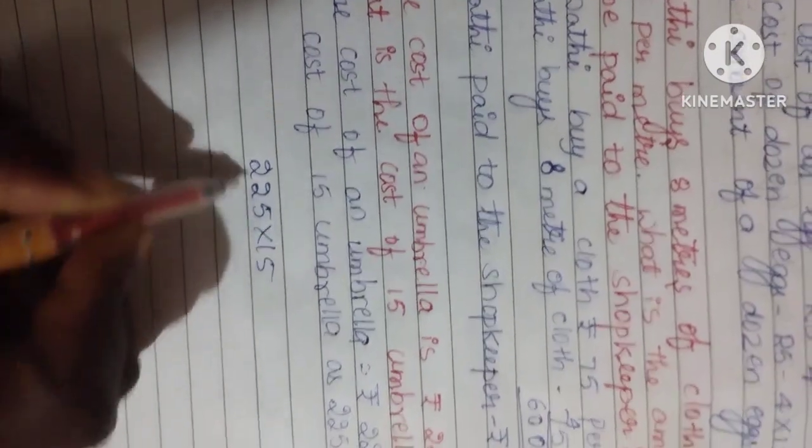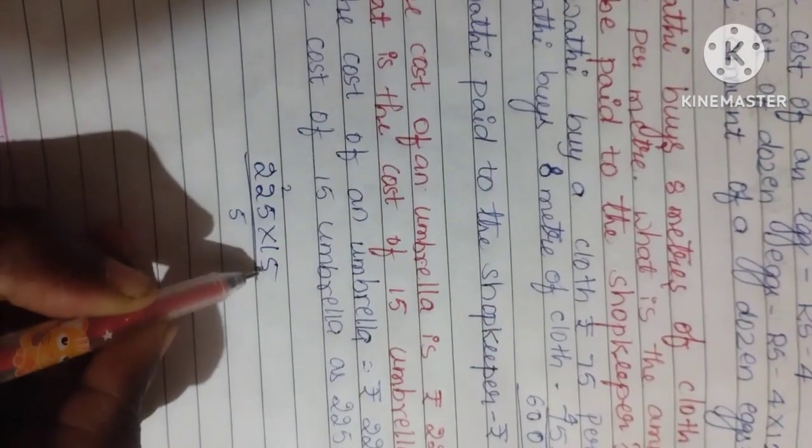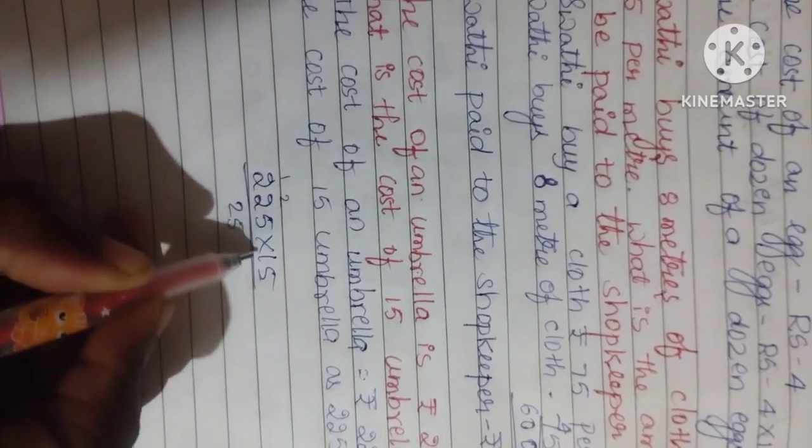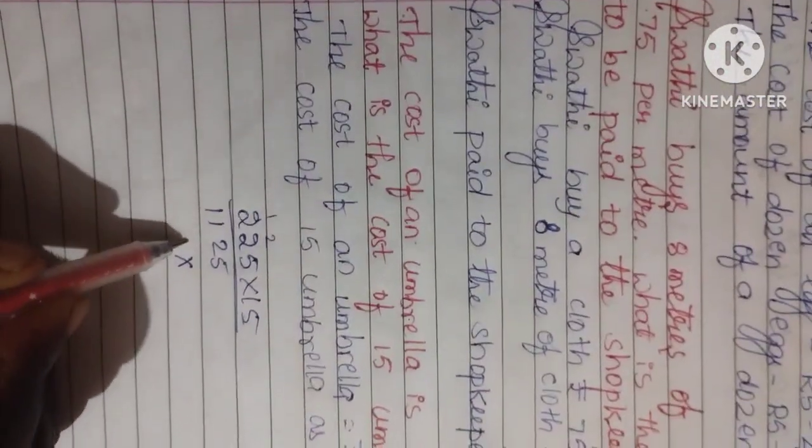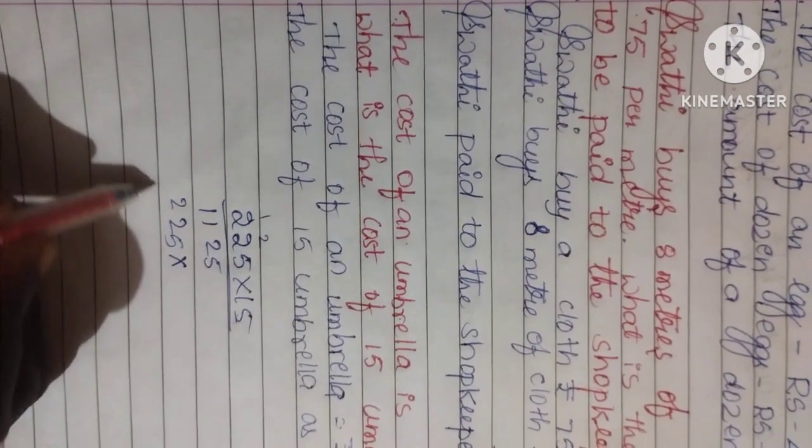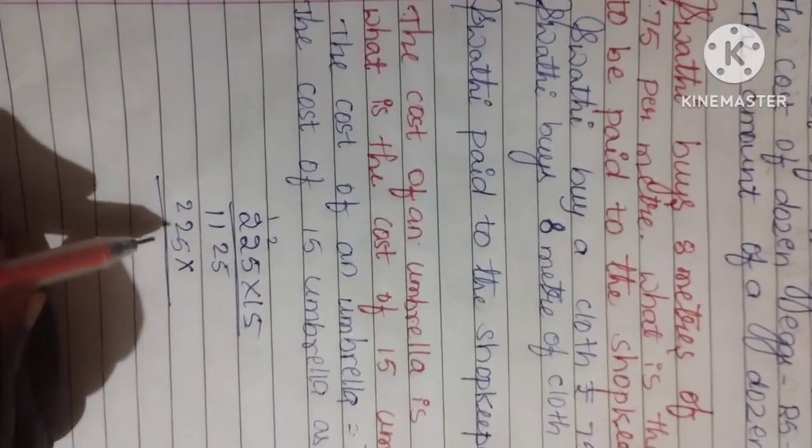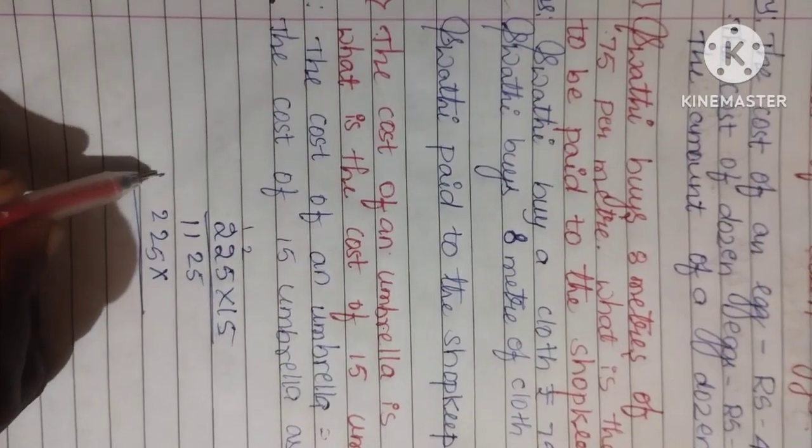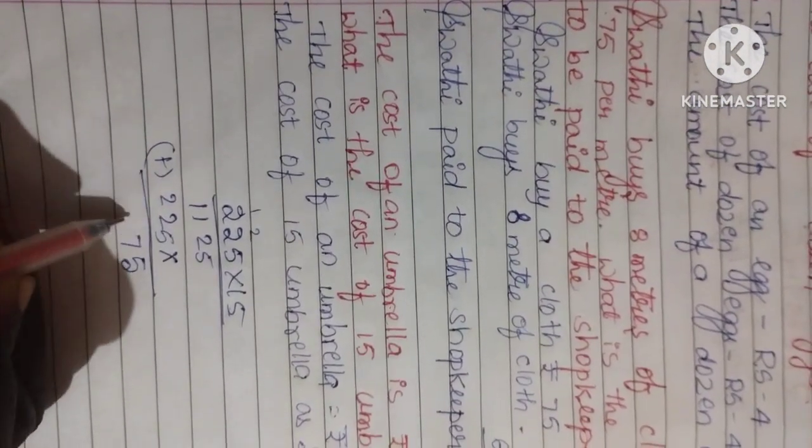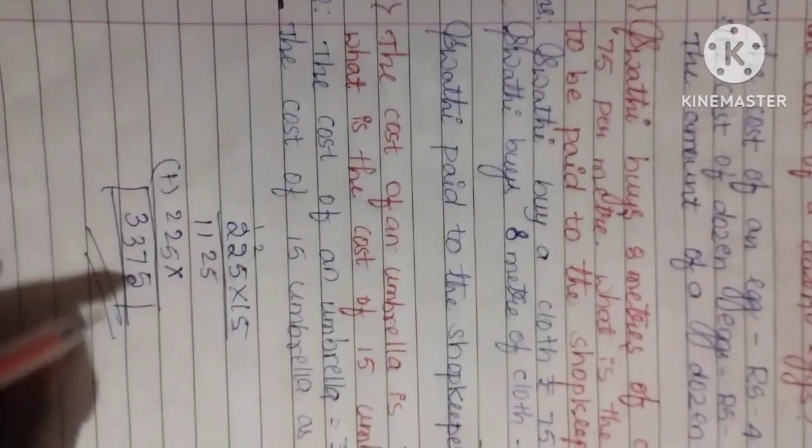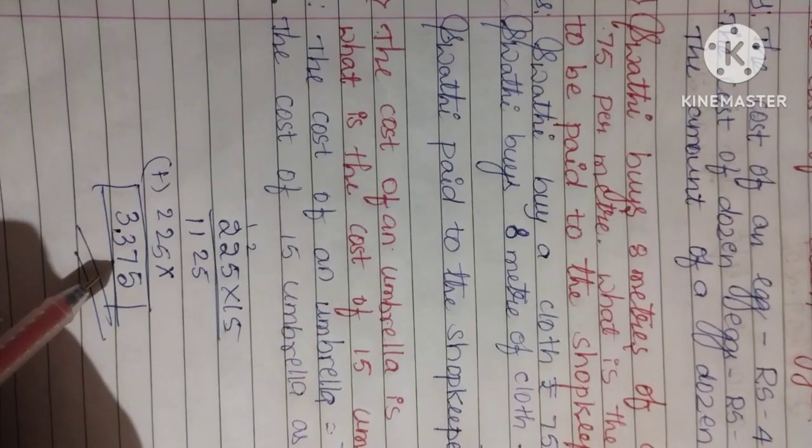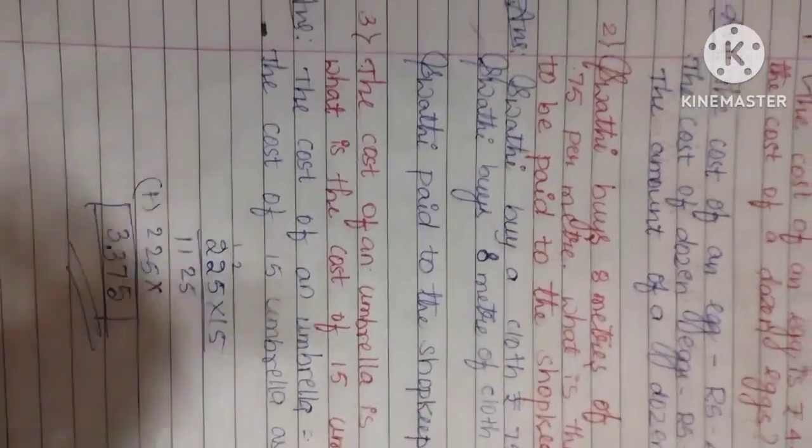We multiply 225 into 15. Five times 5 is 25, 2 carries. Five times 2 is 10 plus 2 equals 12, 1 carries. Five times 2 is 10 plus 1 equals 11. Now 1 times 5 is 5, 1 times 2 is 2, 1 times 2 is 2. Adding these together, the answer is 3,375 rupees.